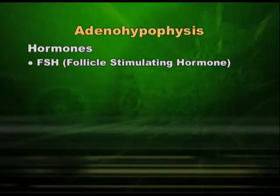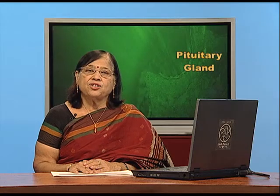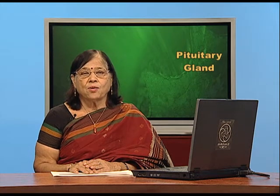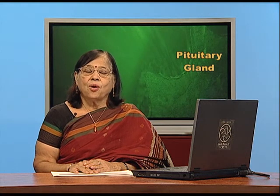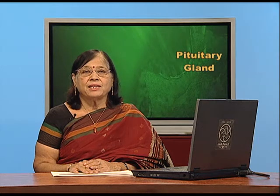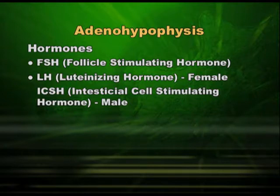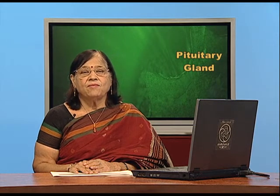The next important hormone from the anterior pituitary is LH, the luteinizing hormone. It causes luteinization in females; luteinization is the term for ovulation. So LH is the ovulating hormone. But in men there is no ovulation, so it is not appropriate to call it LH in the case of men. In men, the same hormone is called ICSH — interstitial cell stimulating hormone — because it acts on interstitial cells, which in turn produce the male hormone.